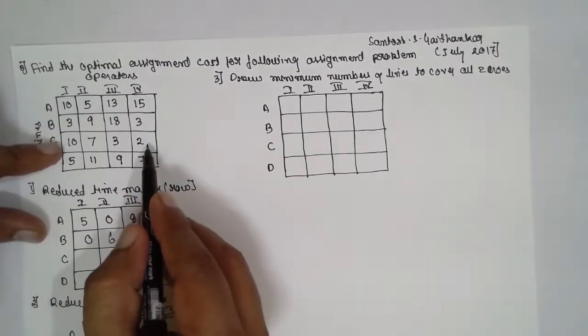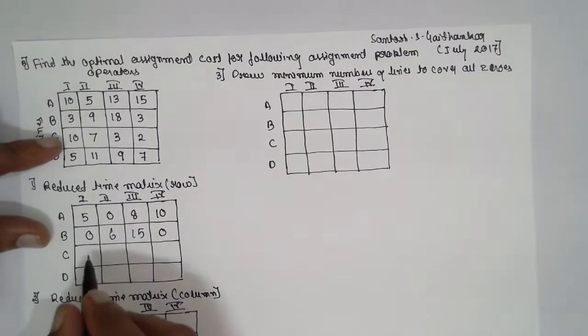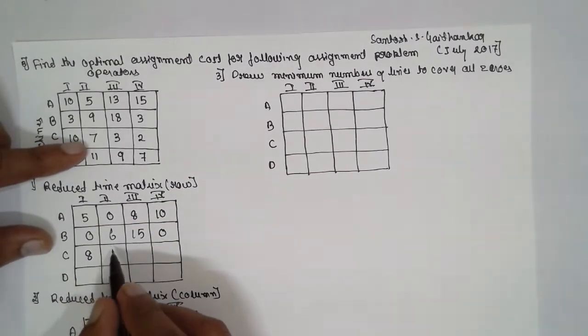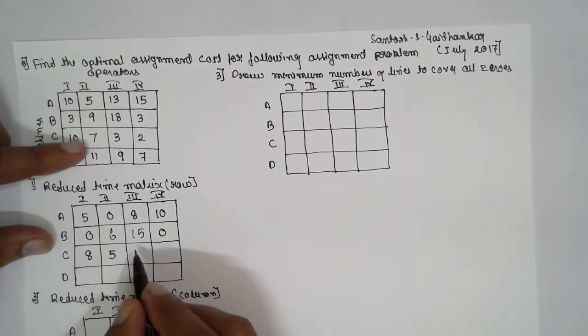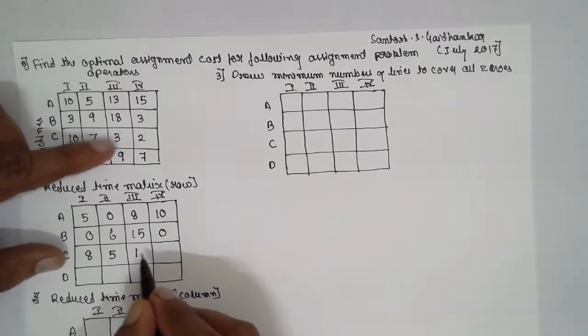The third row, smallest is 2. 10 minus 2 is 8, 7 minus 2 is 5, then 1 and 0.